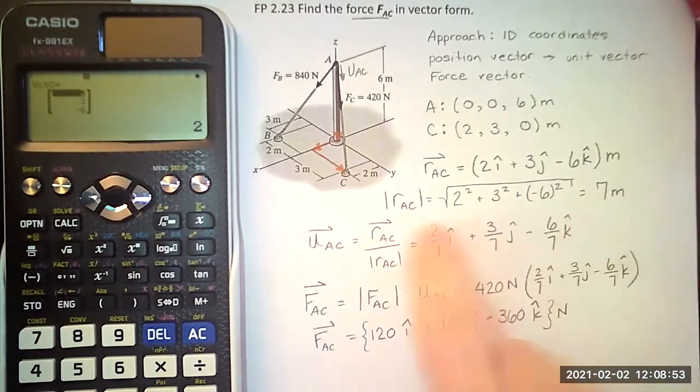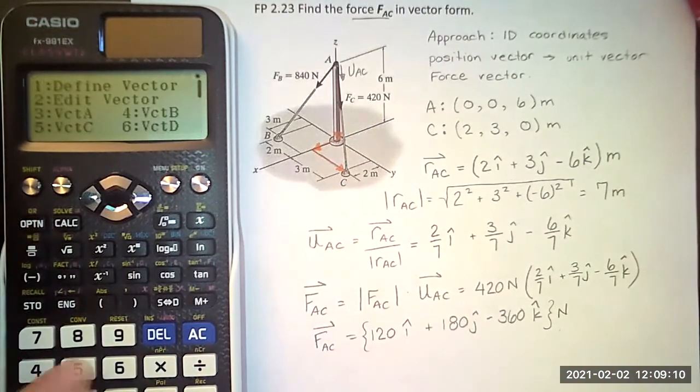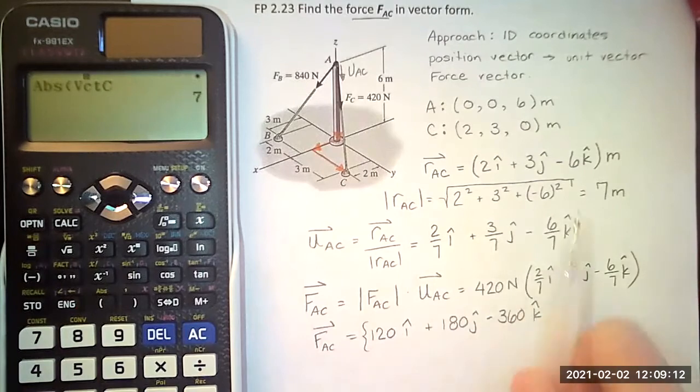To find the length of that, we can do absolute value of vector C. And that'll give me my length 7.